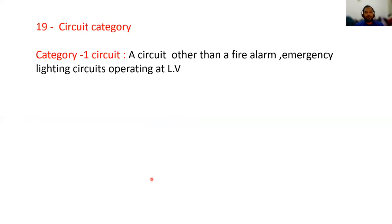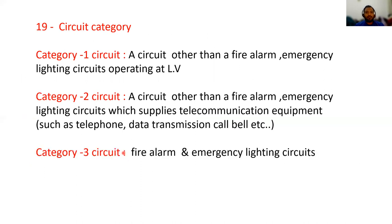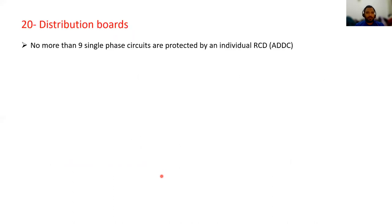Question 19: circuit categories. Category one circuits: a circuit other than fire alarm and emergency lighting circuits operating at LV. Category two circuits: circuits other than fire alarm and emergency lighting which supply telecommunication equipment such as telephone, data transmission, call bells, etc. Category three circuits: fire alarm and emergency lighting circuits. In distribution boards, no more than nine single-phase circuits are protected by individual RCDs as per ADDC.